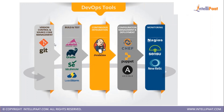The various tools used at each stage are: for development, Git; for build and test, Selenium for testing, and Gradle and Maven for building; for continuous integration, Jenkins; for configuration management and deployment, the tools used are Chef, Puppet, and Ansible — these are the most popular ones; for monitoring, you can use Nagios or Neuralix Sensor.